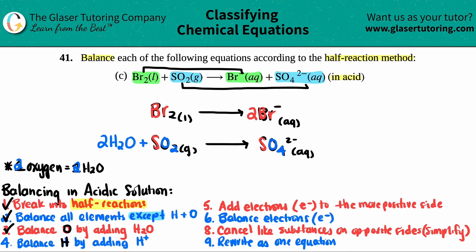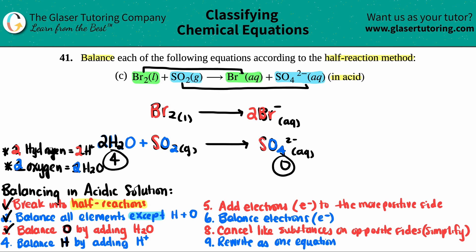Now we balance hydrogen by adding H⁺. The top reaction has no hydrogen so we skip it. On the bottom, we now have hydrogen from the H₂O we added — there's a coefficient of 2 in front of H₂O, giving a total of four hydrogens. There are zero on the other side, so I need to add four H⁺ to that side. Now that's balanced.